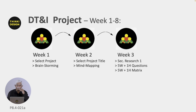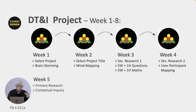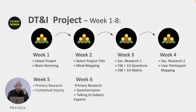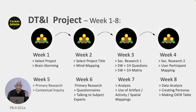Week 3: we started secondary research part 1 — we asked a lot of questions using the 5W and 1H and did a table and matrix out of that. Week 4: we had a closer look at the users, which was secondary research part 2, and you did a user participant mapping. Week 5: we started primary research part 1 with contextual enquiry. Week 6: primary research part 2 — questionnaires and talking to a subject expert using cue cards. Week 7: analysis part 1, with artifact, activity and spatial mappings. Week 8: analysis part 2 — creating personas and making the OI-OR table, followed by redefining the problem statement.